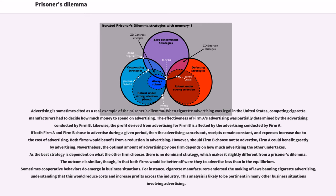Advertising is sometimes cited as a real example of the prisoner's dilemma. When cigarette advertising was legal in the United States, competing cigarette manufacturers had to decide how much money to spend on advertising. The effectiveness of Firm A's advertising was partially determined by the advertising conducted by Firm B, and likewise the profit derived from advertising for Firm B is affected by the advertising conducted by Firm A. If both Firm A and Firm B chose to advertise during a given period, then the advertising cancels out, receipts remain constant, and expenses increase due to the cost of advertising. Both firms would benefit from a reduction in advertising. However, should Firm B choose not to advertise, Firm A could benefit greatly by advertising.